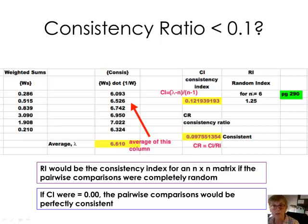And for n, the number of criteria we have, the random index for that randomly generated 6x6 matrix is 1.25. So to calculate this consistency ratio, to determine if the matrix we've looked at is consistent, I'll take CI and divide it by RI, and that'll give me the consistency ratio.